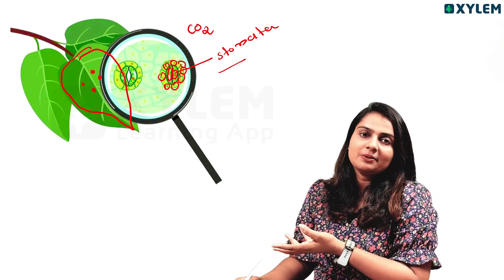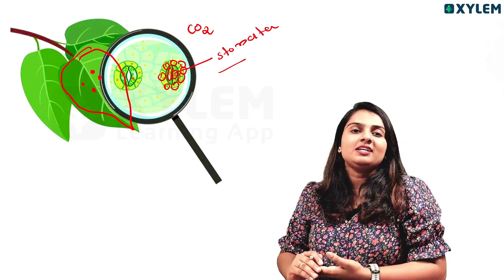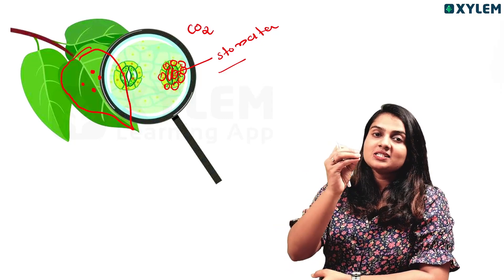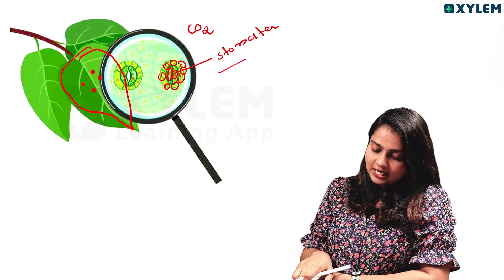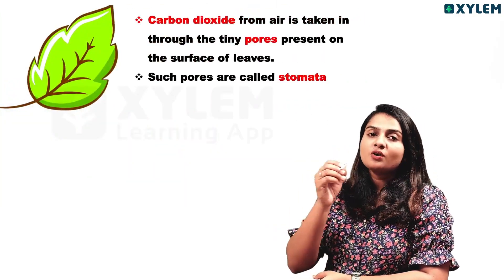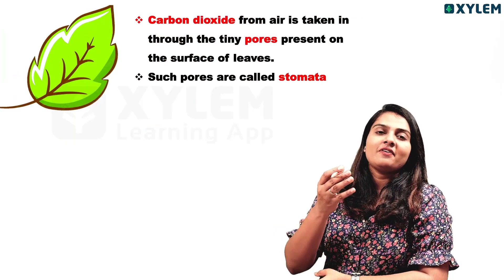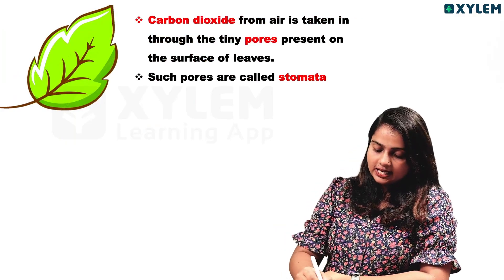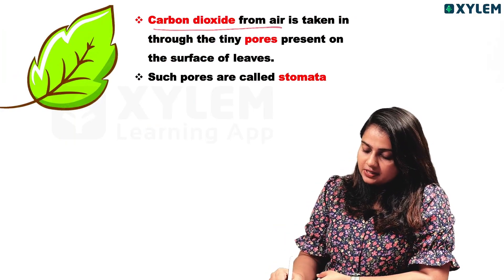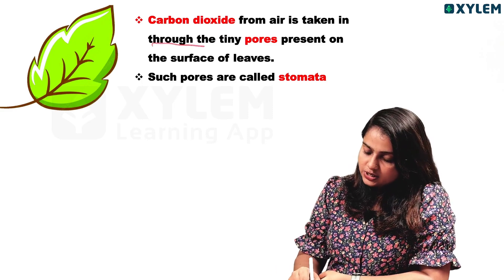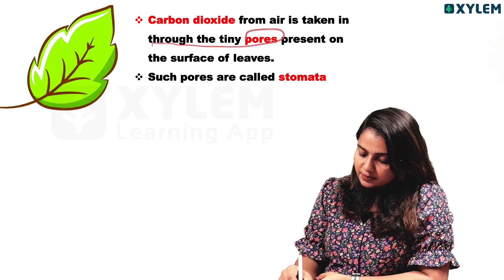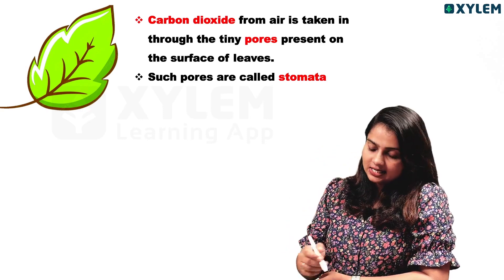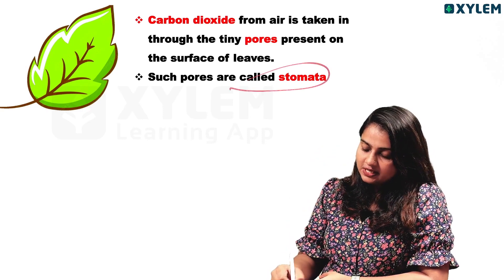What do we call stomata? Stomata are called the site of gas exchange. Carbon dioxide is taken in through the stomata. Carbon dioxide from the air is taken through tiny pores present on the surface of the leaf — these are called stomata.